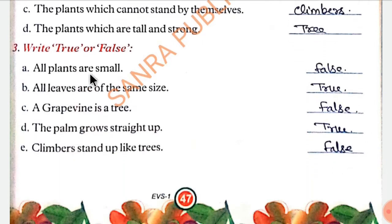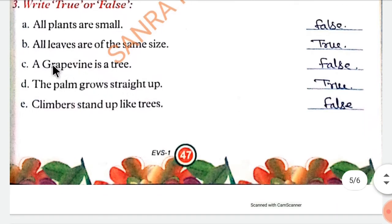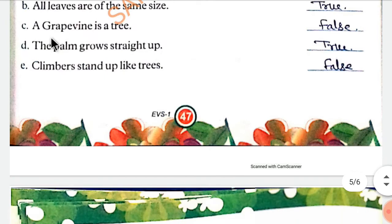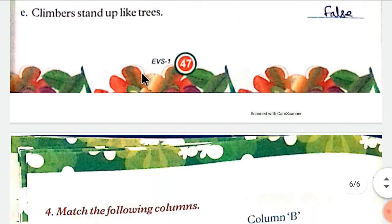True and False. All plants are small — False. All leaves are of the same size — False. The palm grows straight up — True. Climbers stand up like a tree — False.